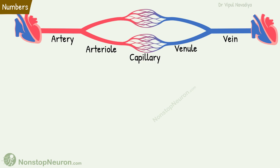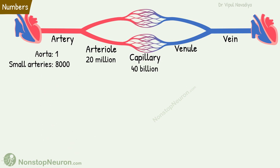First, the number of vessels. We have one aorta that divides to make about 8,000 small arteries. Then we have about 20 million arterioles supplying 40 billion capillaries. On the venous side, the numbers decrease as vessels merge and eventually we have two vena cava. So these were some remarkable numbers regarding the number of vessels.